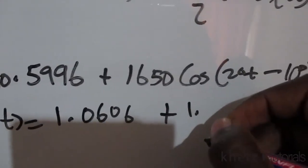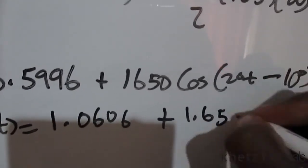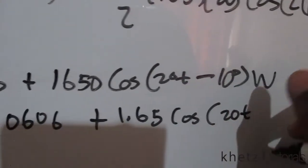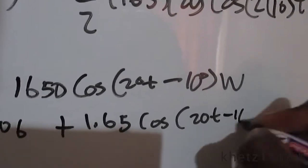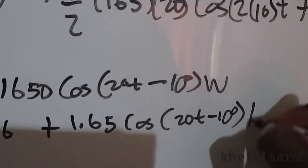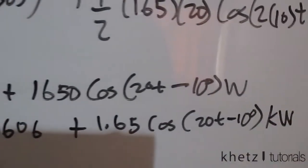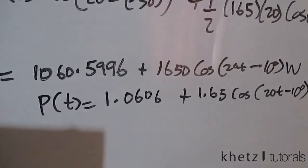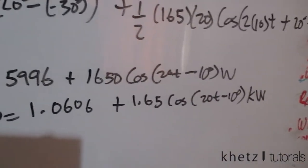Plus 1.65 cosine (20t - 10°) and all of that is now in kilowatts. So that is the first part of the question. This is the instantaneous power.